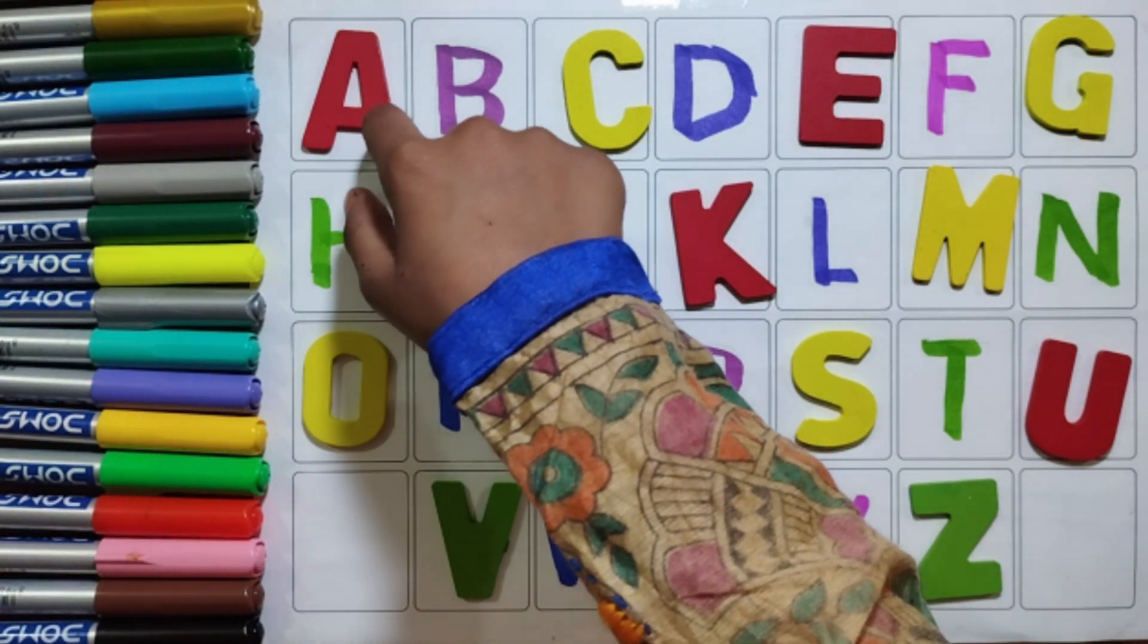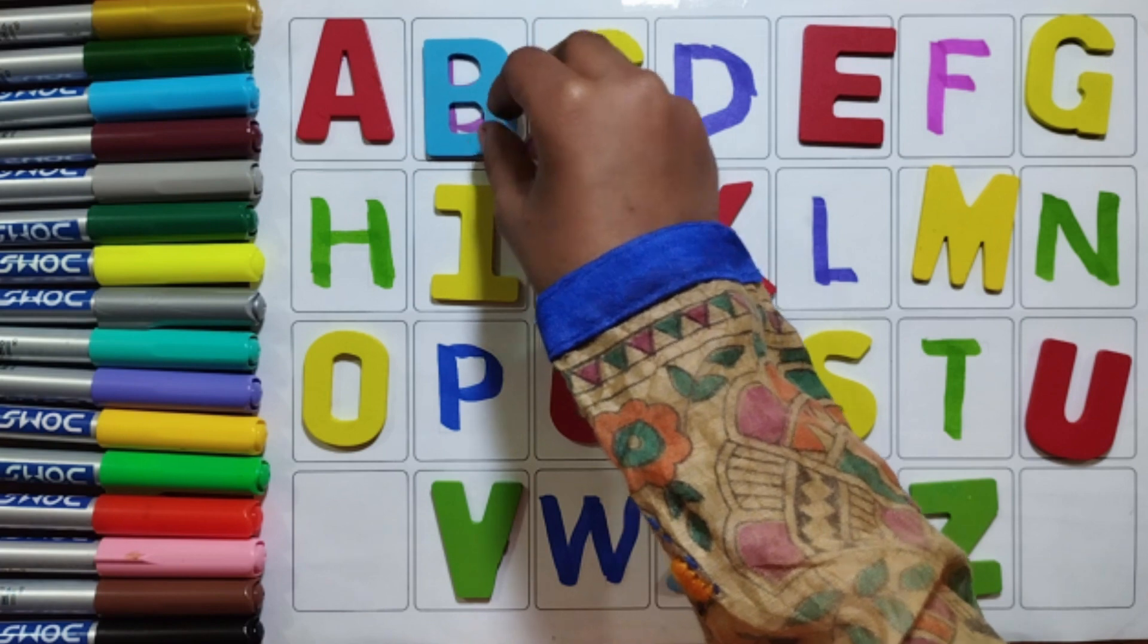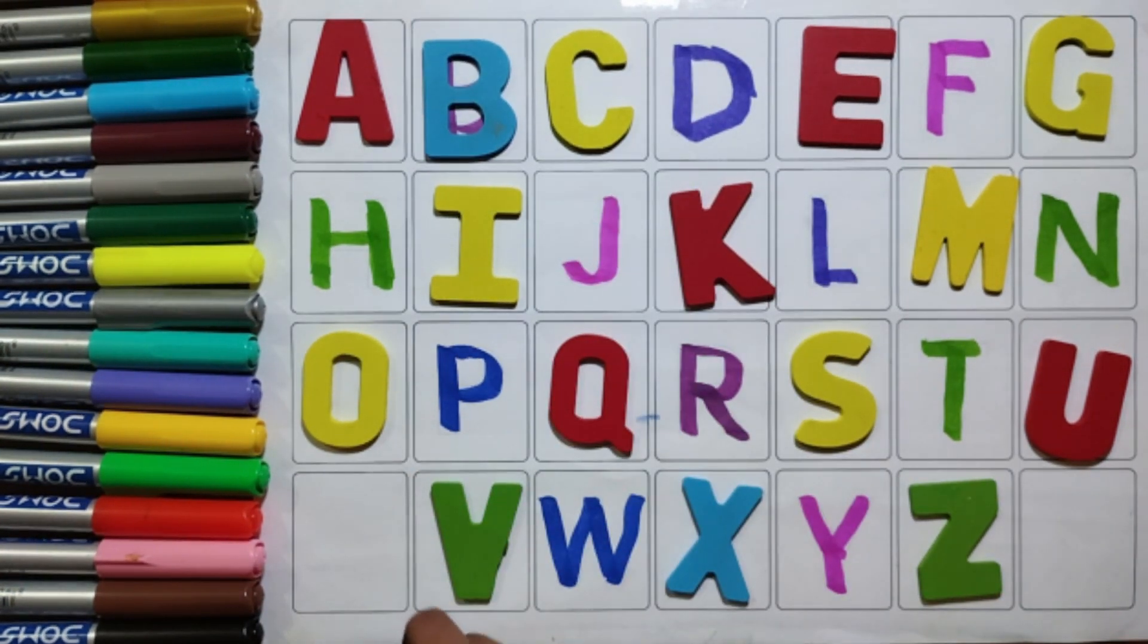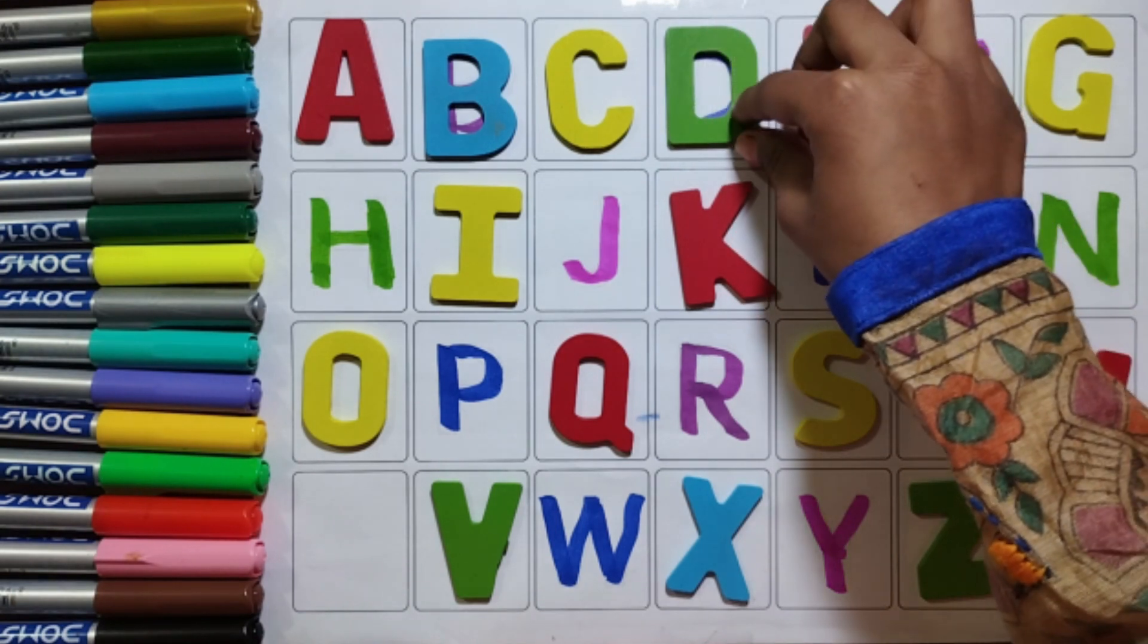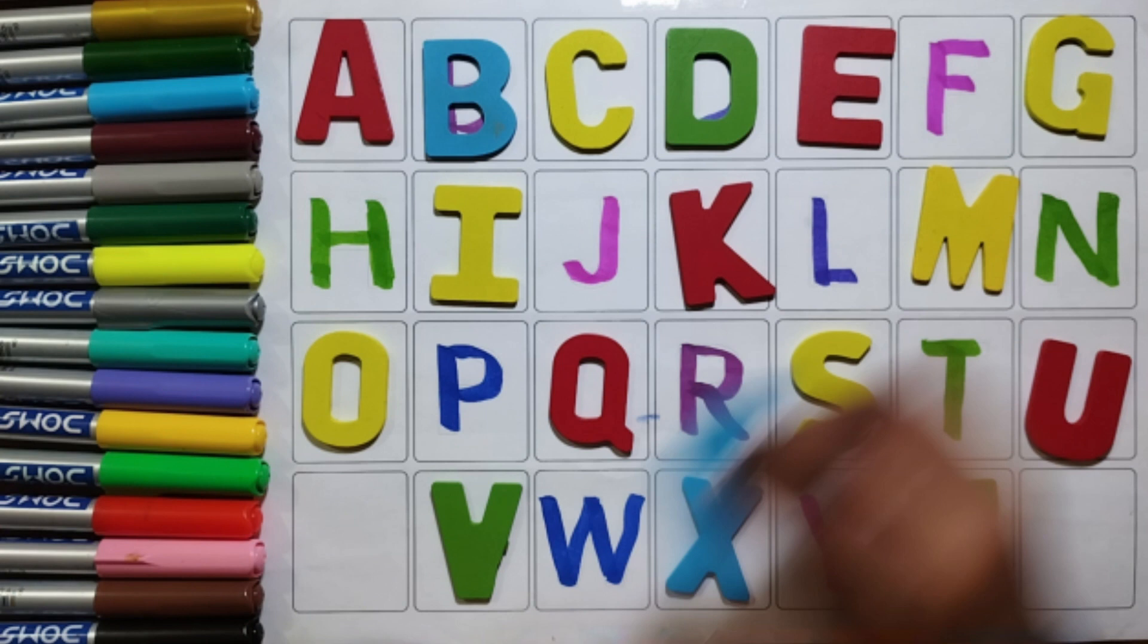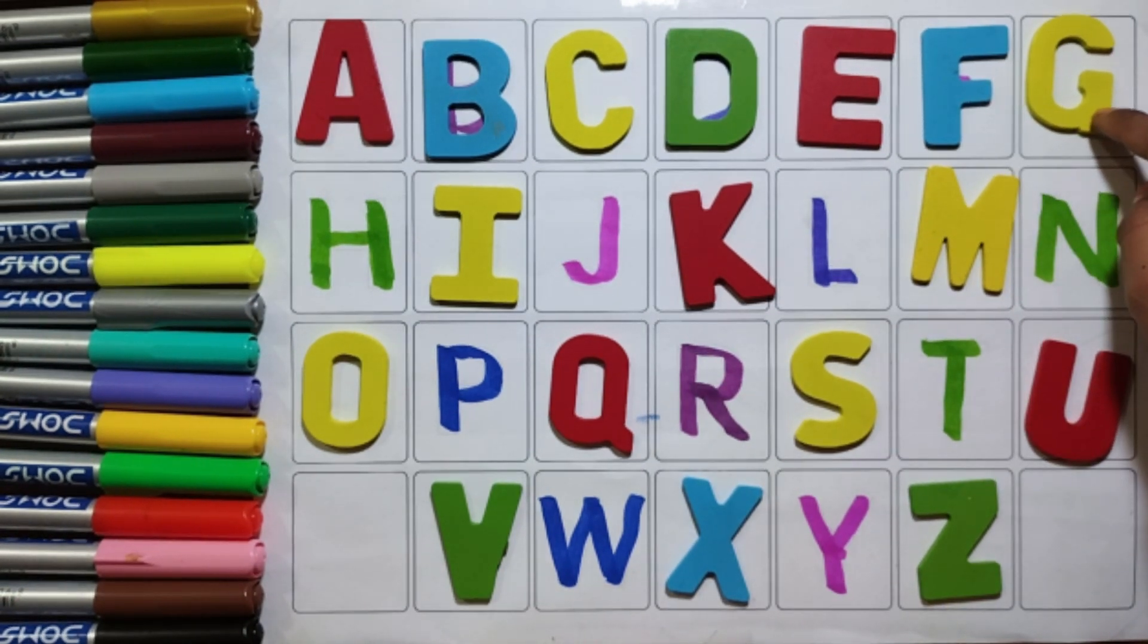Red colour A A for Apple. Sky blue colour B B for Ball. Yellow colour C C for Cat. Green colour D D for Dog. Red colour E E for Elephant. Sky blue colour F F for Fish. Yellow colour G G for God.